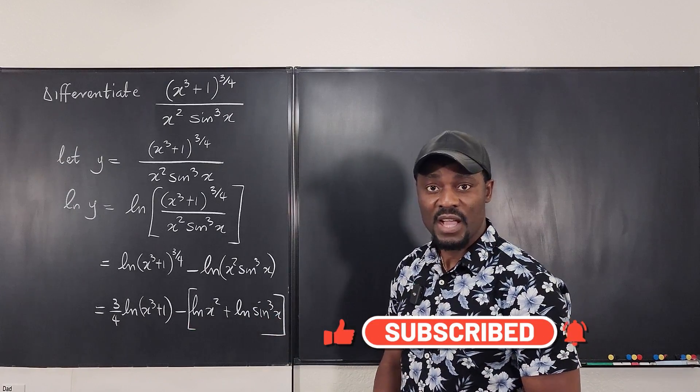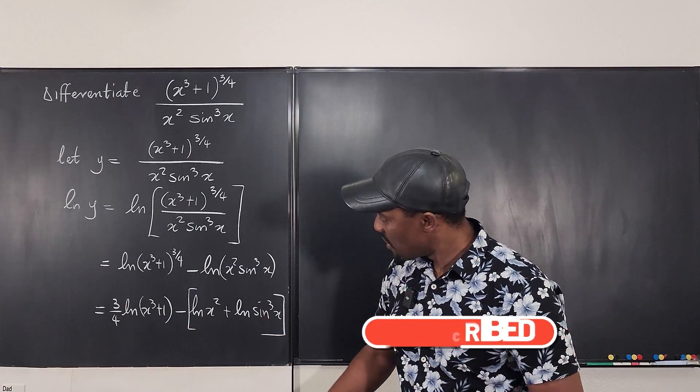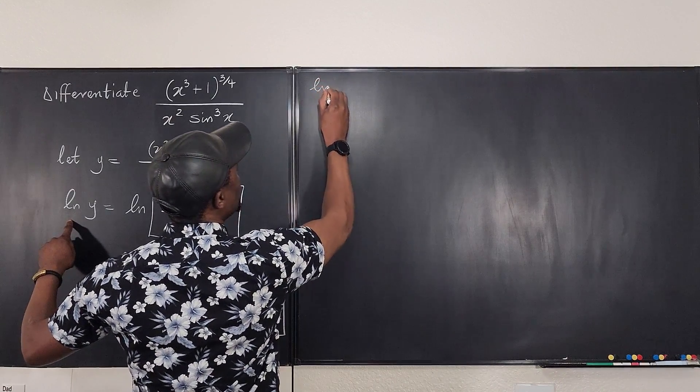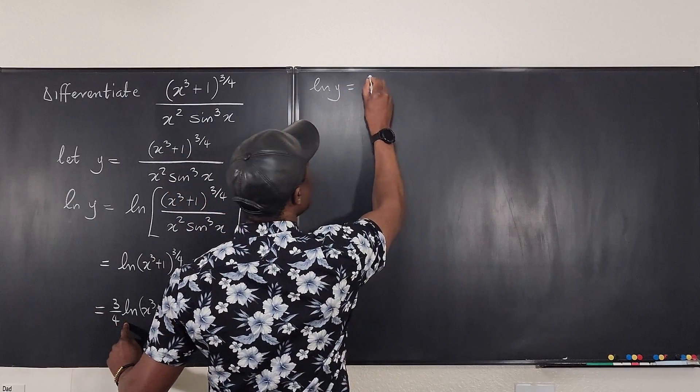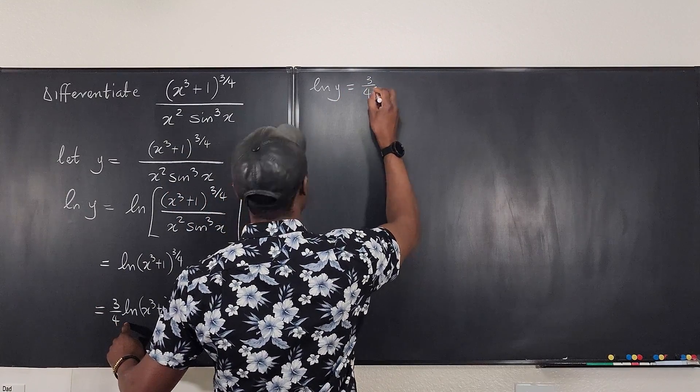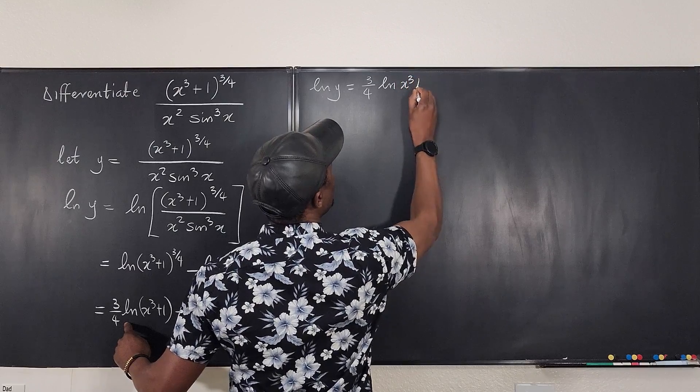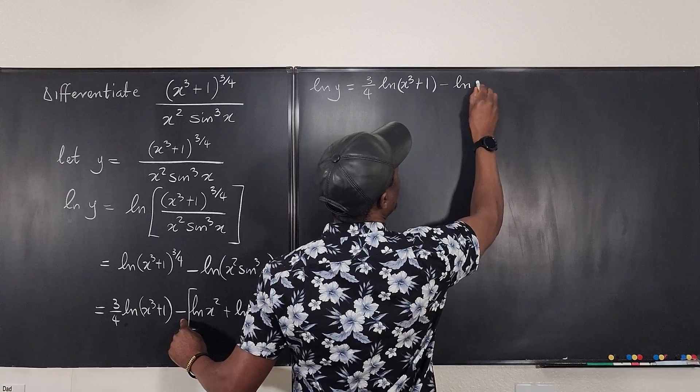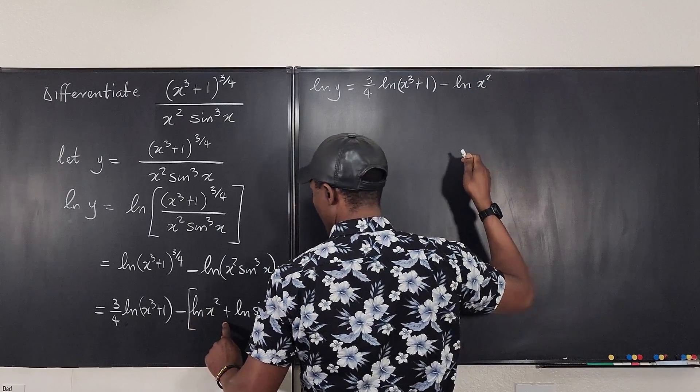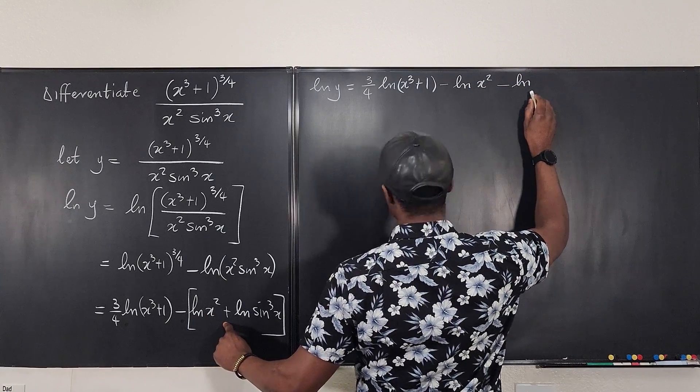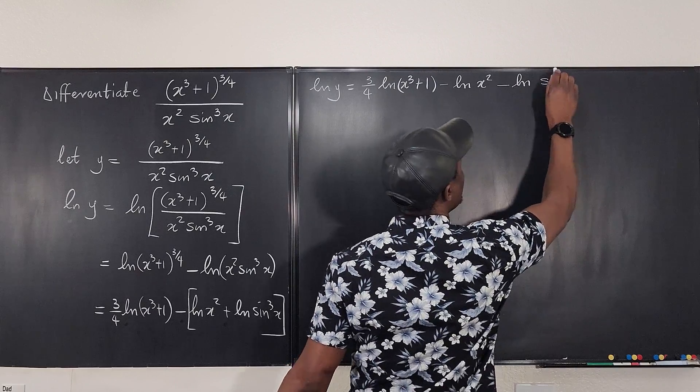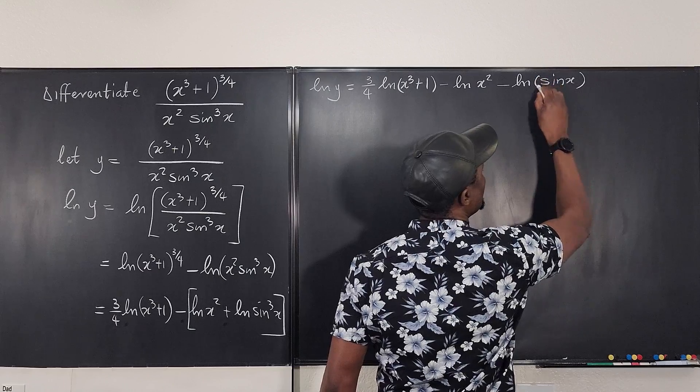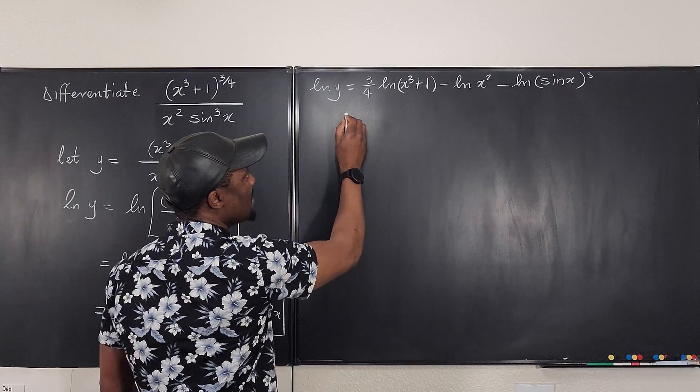Now I can distribute this negative sign, but let's keep going. So we're going to say the natural log of y is equal to 3 over 4 natural log of x cubed plus 1, and this is going to be minus the natural log of x squared minus the natural log of sine cubed x, which I'm going to write as sine x cubed.